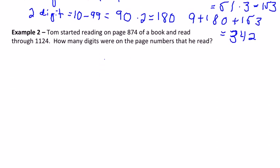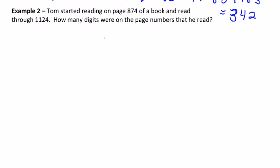Okay, our second problem says Tom started reading on page 874 of a book, and it read through page 1124, how many digits were on the page numbers. Well, there's two categories on this. There's the three digit numbers from 874 to 999. Those are all three digit numbers. Subtract those two.